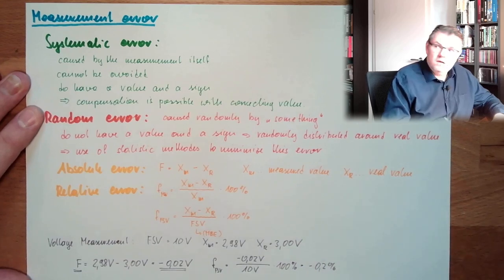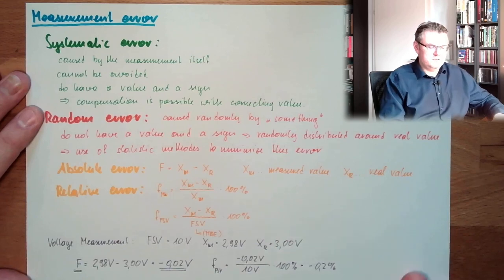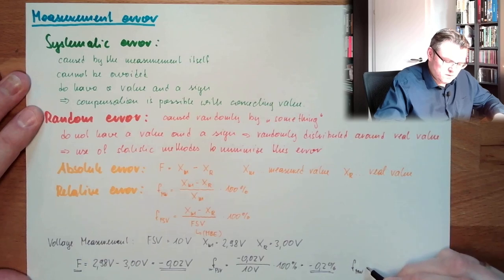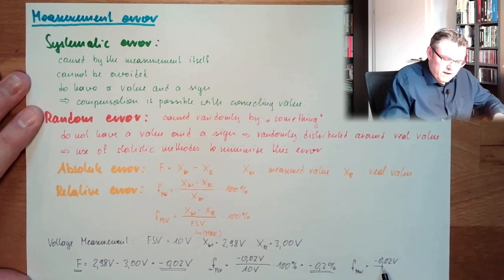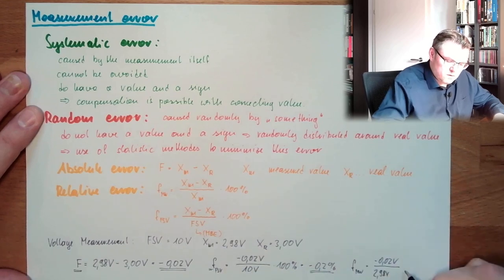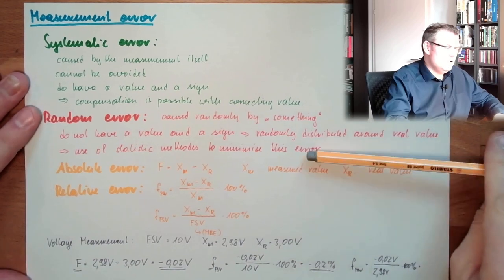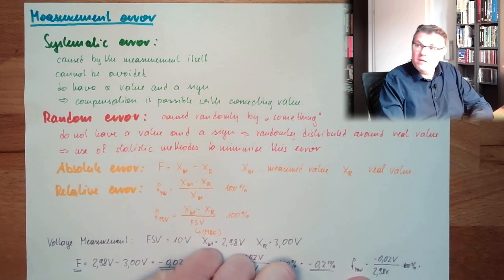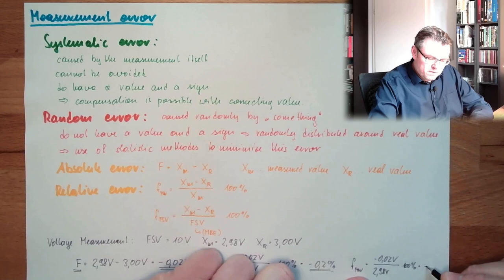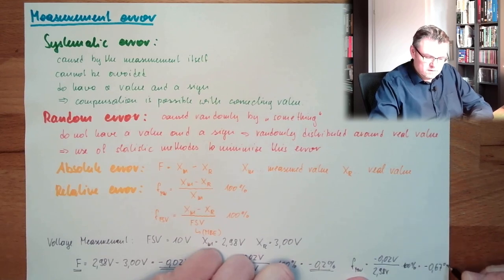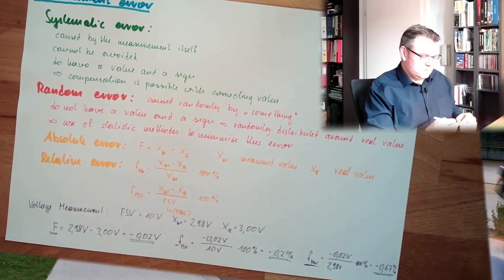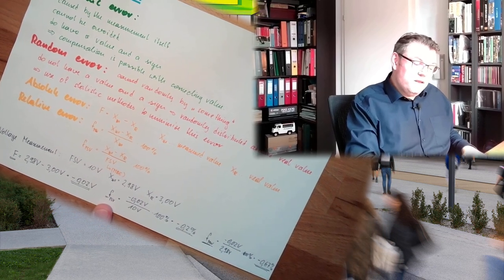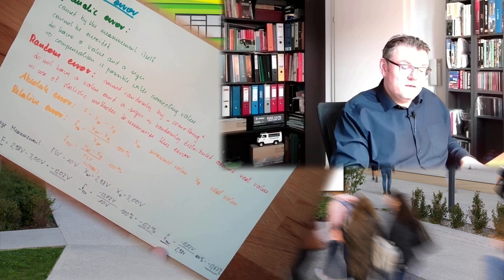And the relative error compared to the measured value is minus 0.02 volts divided by 2.98, multiplied by 100 percent. Typing this in: minus 0.02 divided by 2.98 multiplied by 100 gives minus 0.67 percent. So we have the absolute error, the relative error to the full scale value, and the relative error to the measured value.